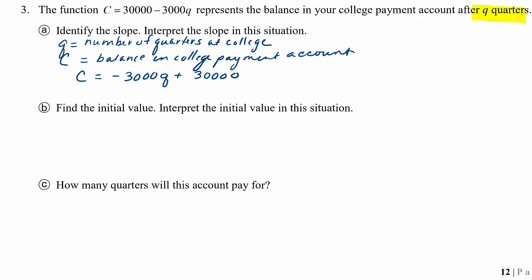So then the slope will be the coefficient of Q, our input variable, and it's a negative. So what does that mean about the college balance? Well, that means that the balance is decreasing. And by how much? $3,000, but how often?